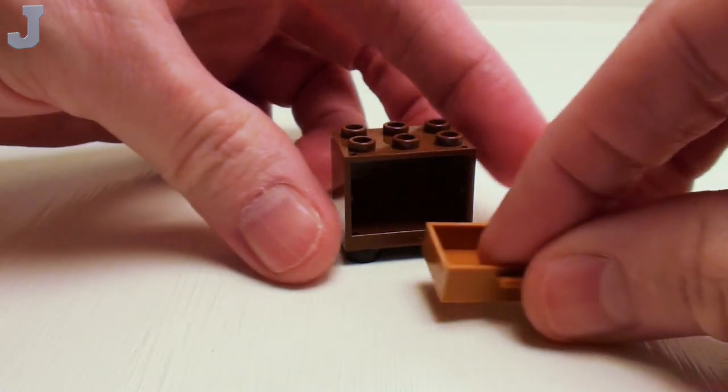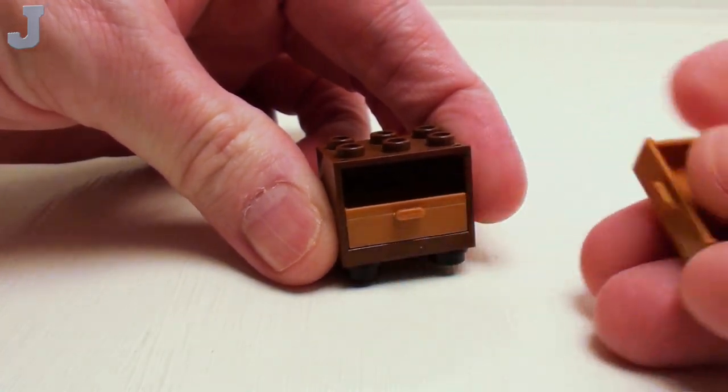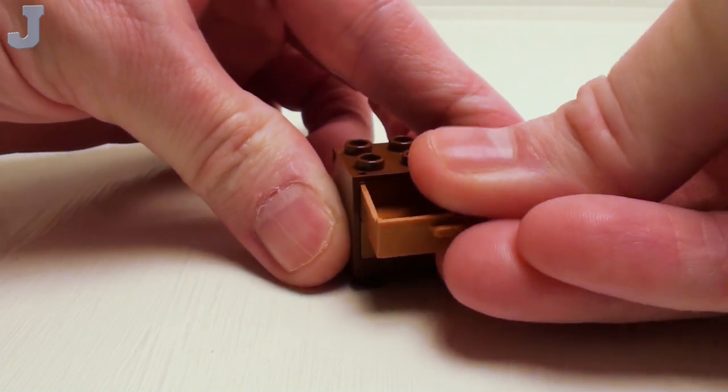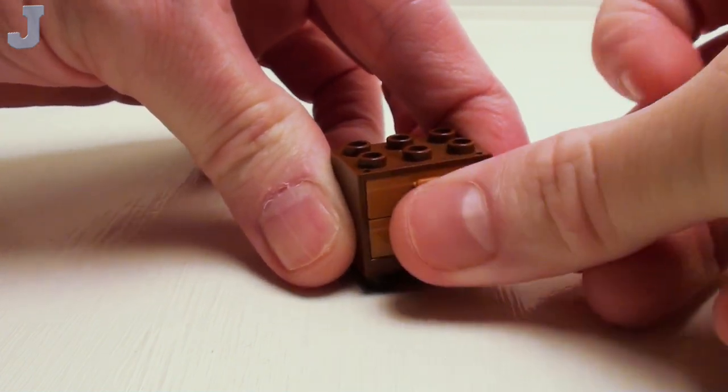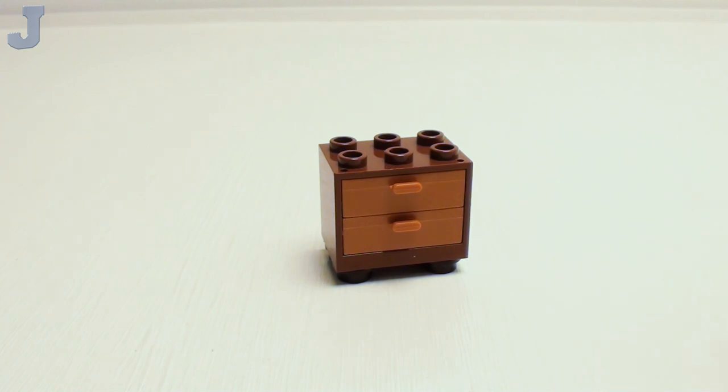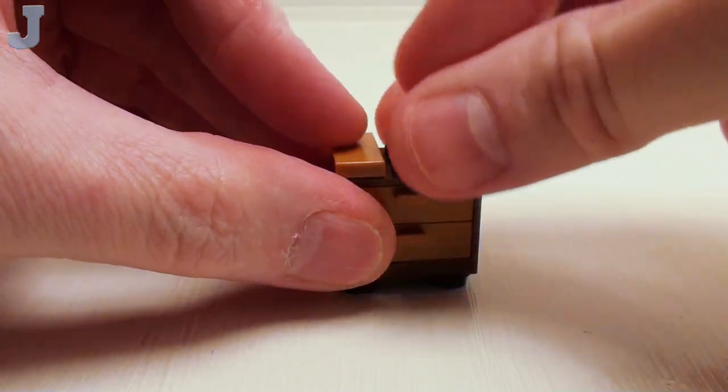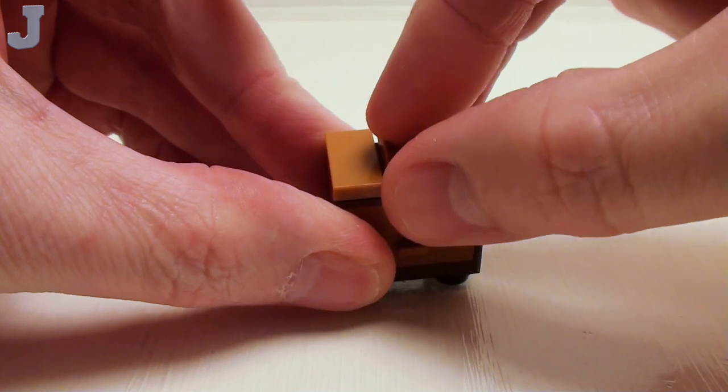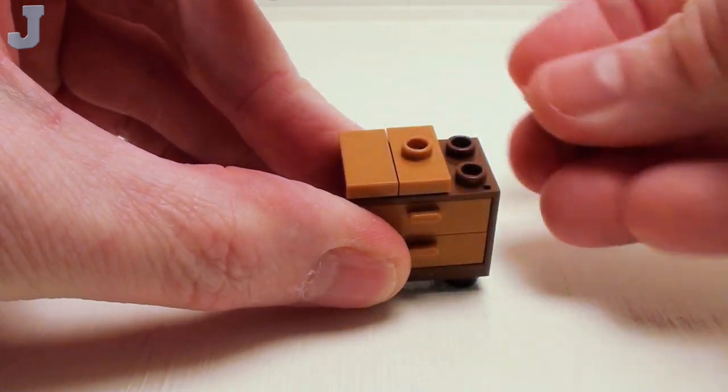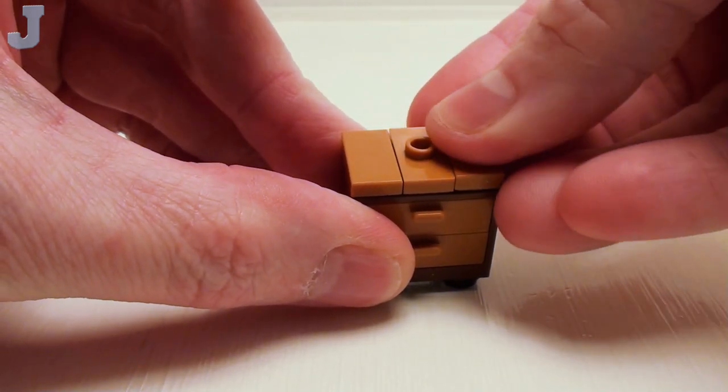Next, we're going to place a set of medium nougat drawers. And on the top, a 1x2 flat tile, a 1x2 jumper plate, and a 1x2 flat tile.